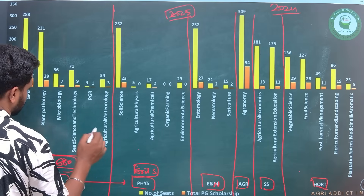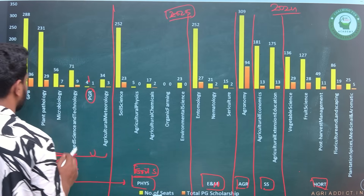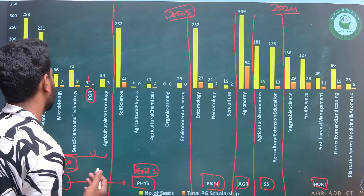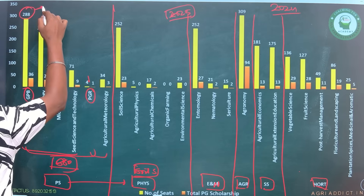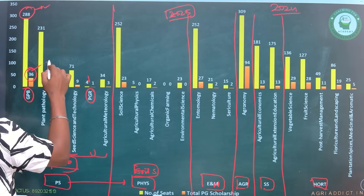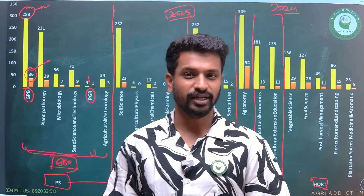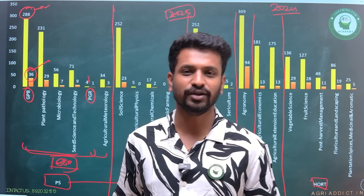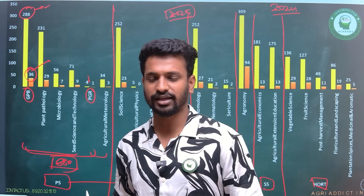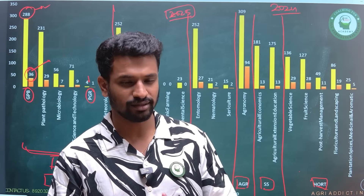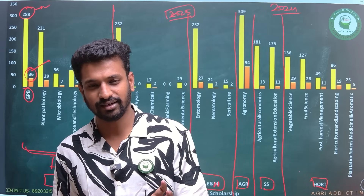This 680 is divided into five different departments. The PGR option is only available in IARI, and the rest four subjects are available in different state agriculture universities, central agriculture universities, and open universities like BHU. For GPB (Genetics and Plant Breeding), the total number of ICAR seats is 288, but out of those only 36 are ICAR PG fellowships. So if you want to get a PG fellowship seat in GPB, if your rank is less than 36 you will definitely get it, but if it is above 36 it depends on the choices made by students with better ranks.